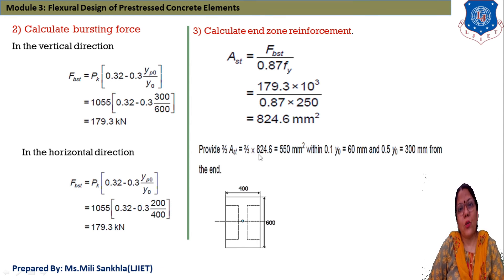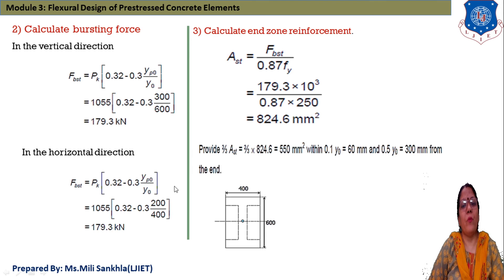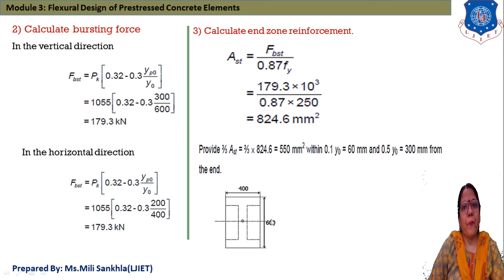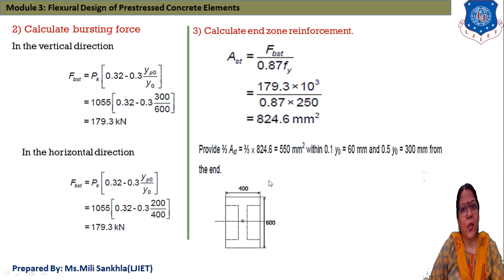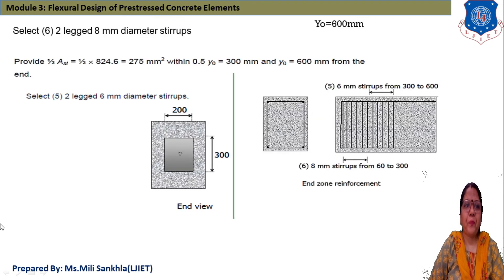We provide two-thirds of Ast within a specified range: (2/3) × 824.6 = 550 mm square. This reinforcement is provided between 0.1×Y0 and 0.5×Y0 from the end. With Y0 = 600 mm: 0.1×600 = 60 mm and 0.5×600 = 300 mm. So 550 mm² of reinforcement is provided between 60 mm and 300 mm from the end.